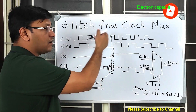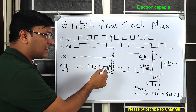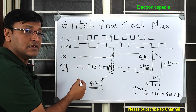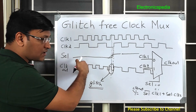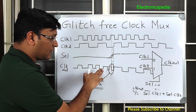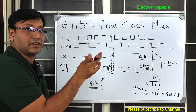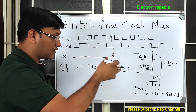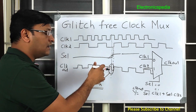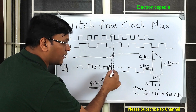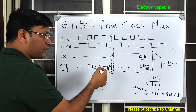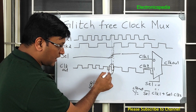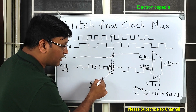Whenever we say glitch-free clock mux, we have to ensure there are no glitches present on the output clock. We have to ensure the clocks are clean and the complete period of the clock is present — it's not chopping the clock. A complete cycle of the clock should be present, so we have to design circuits such that these glitches do not appear on the output clock.